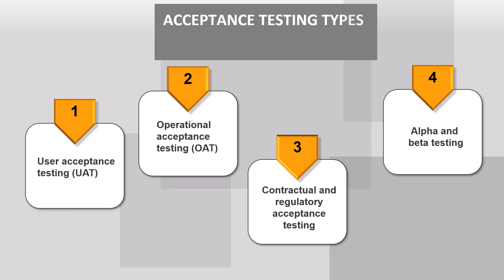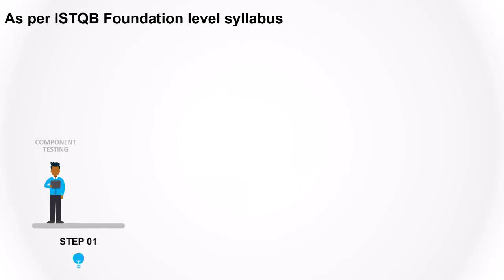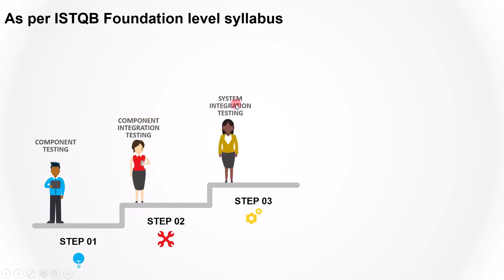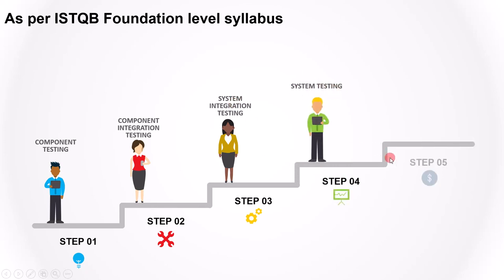We will cover them in the upcoming lecture. Now let's see the test level hierarchy as per the ISTQB foundation level syllabus. First, we do component testing. After component testing, we do component integration testing. Next is system integration testing. After this, we do system testing. And finally, at the end, we perform acceptance testing. Please remember them in the same order as mentioned here.